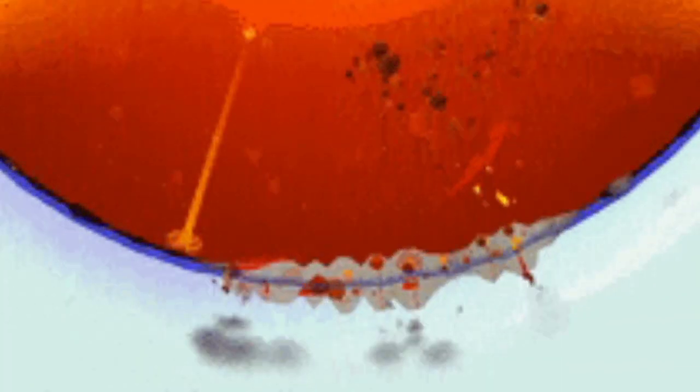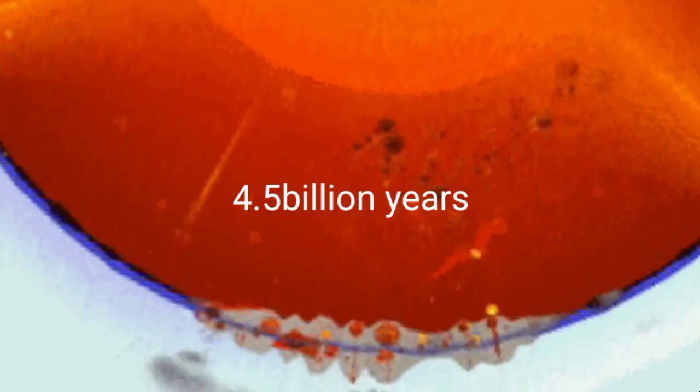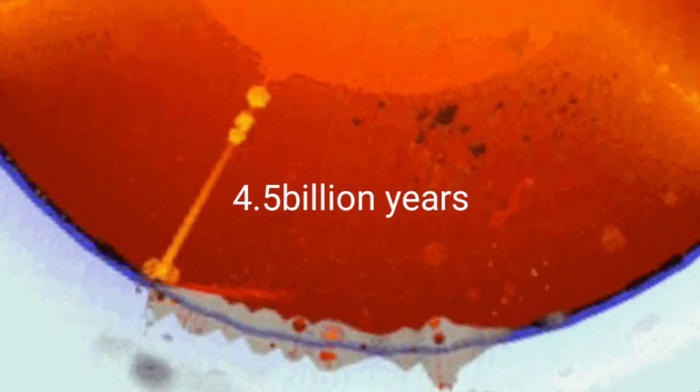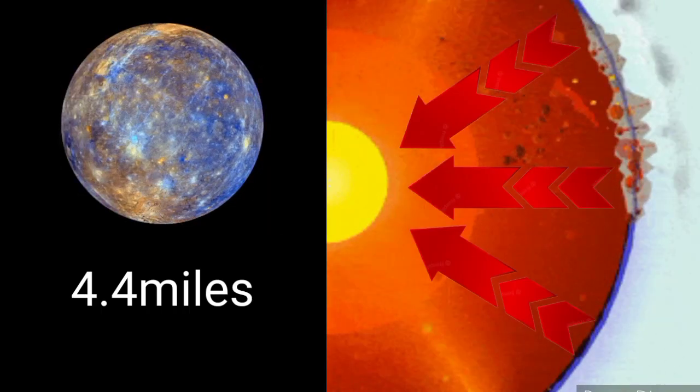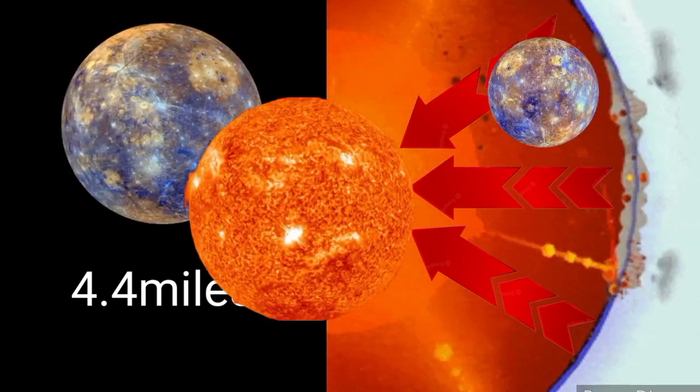The hot iron core has slowly cooled and contracted over the planet's 4.5 billion years. In doing so, it pulled Mercury's surface inward and has caused the planet to shrink radially by more than 4.4 miles.